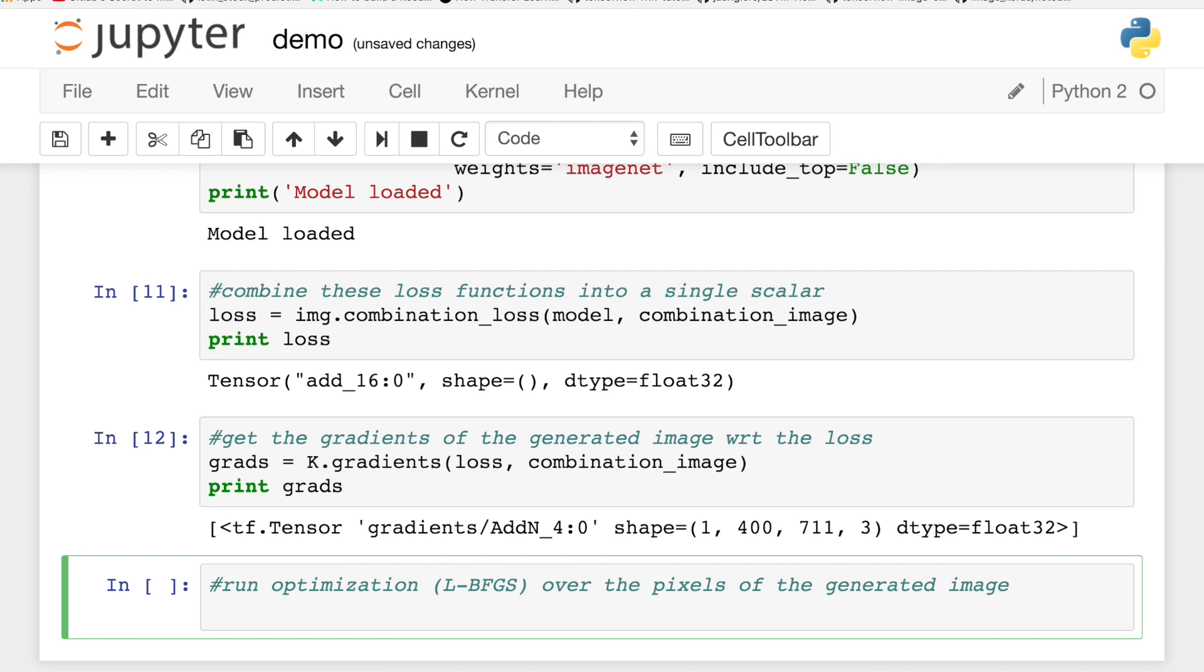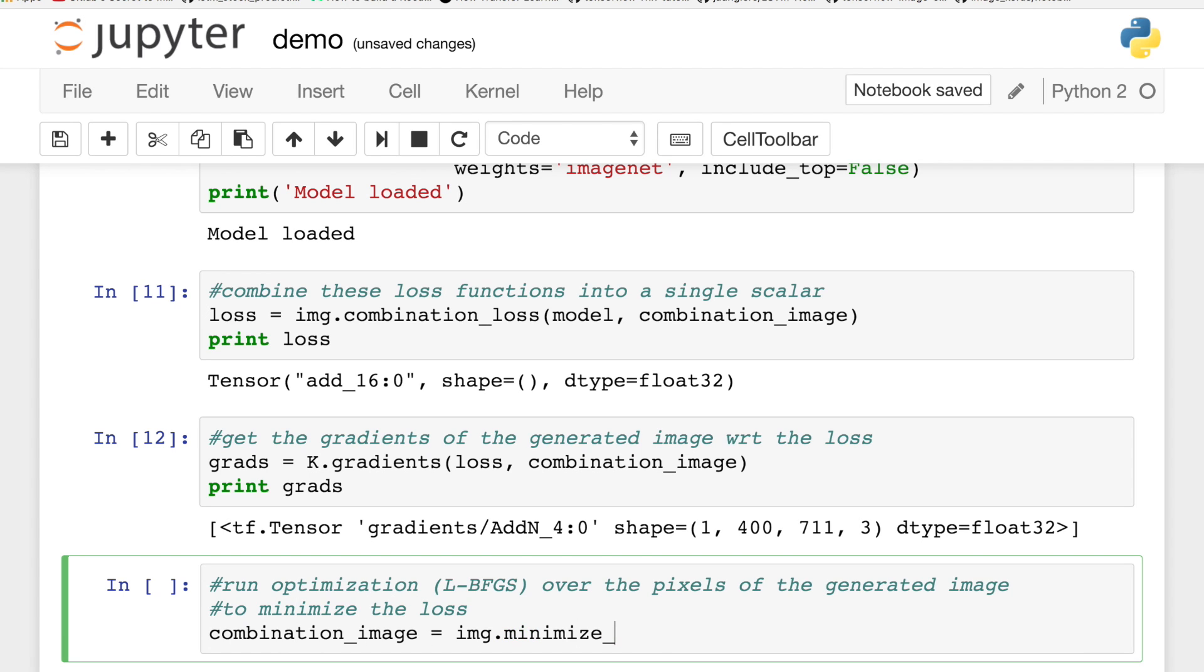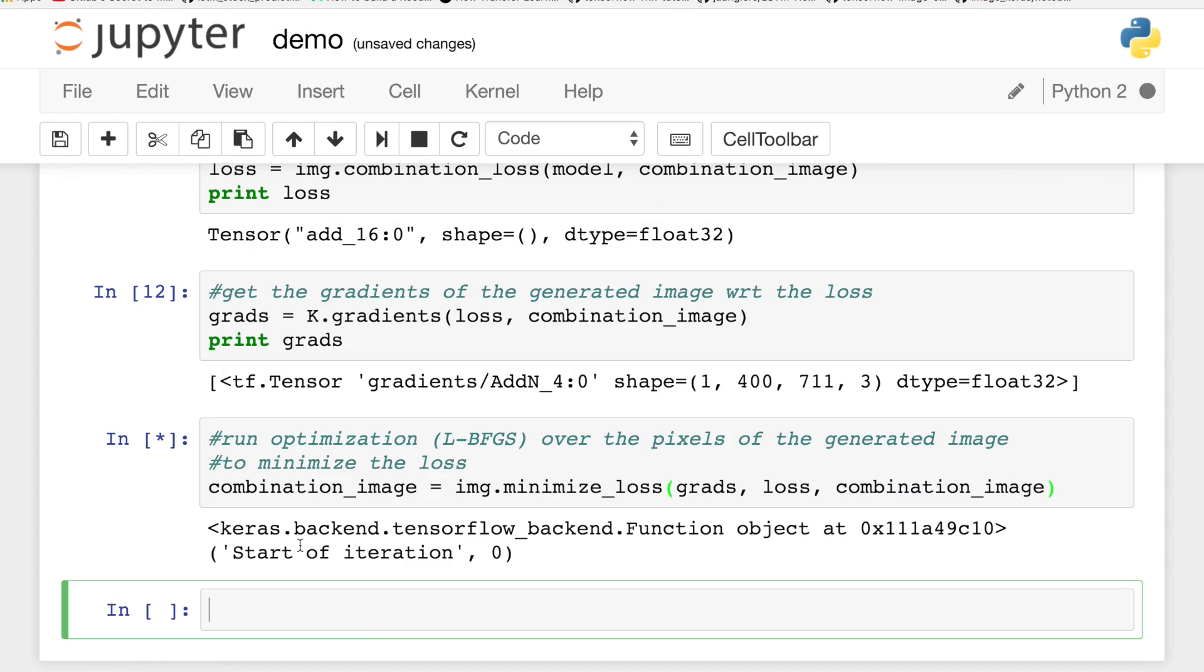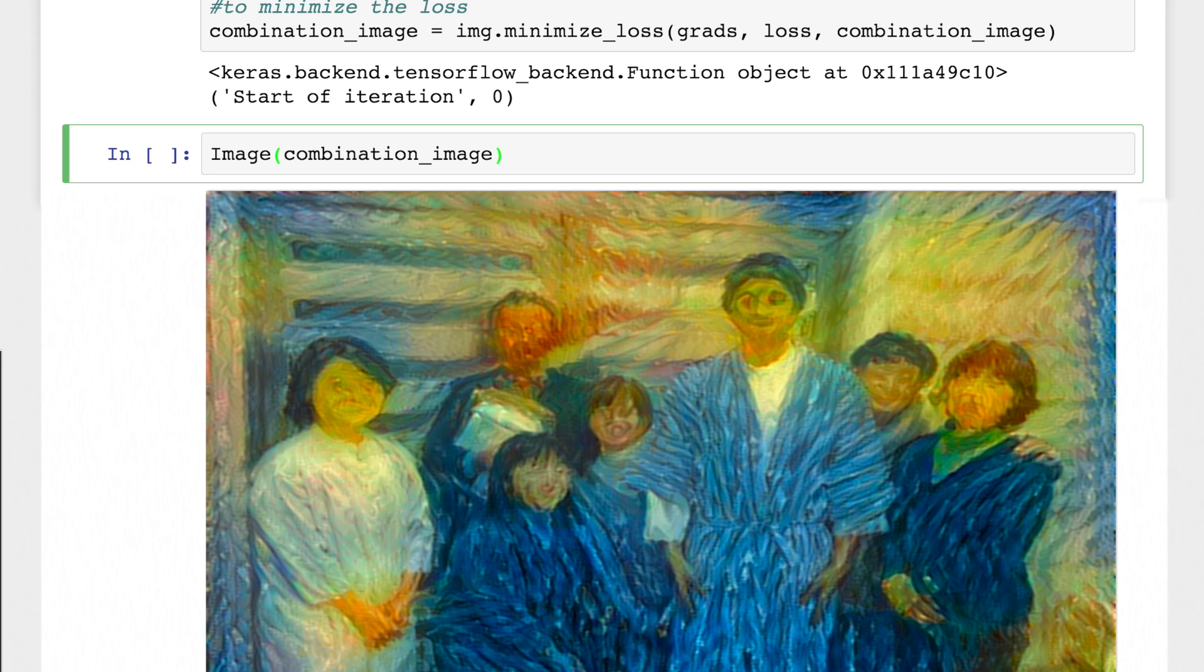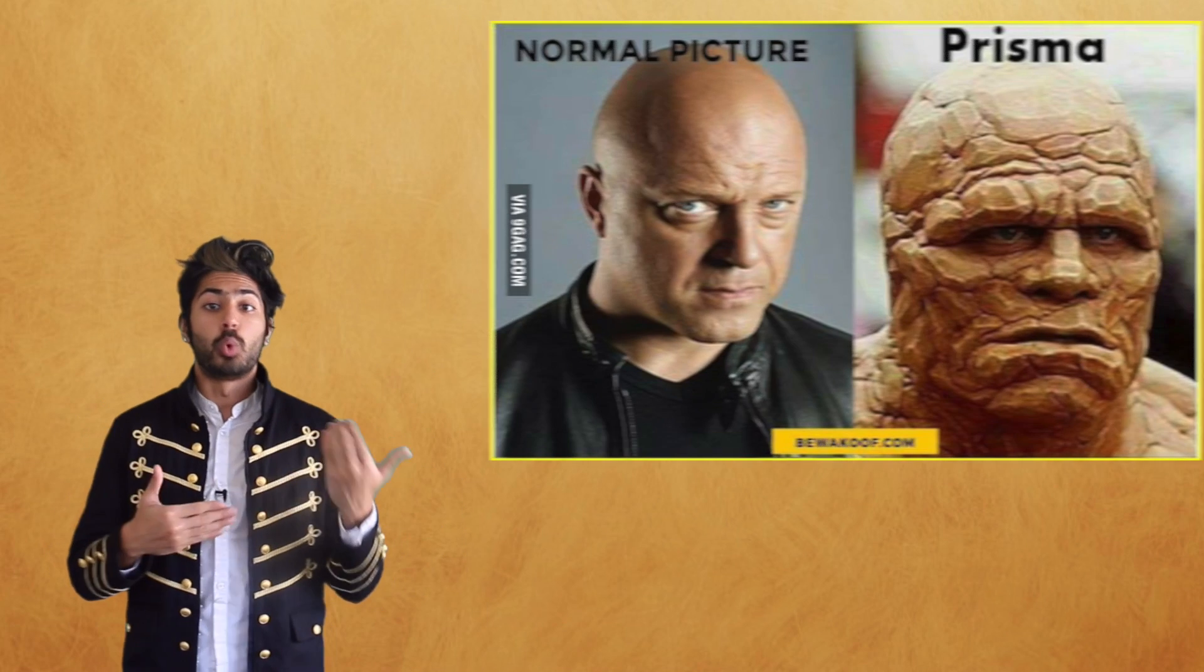Next, we'll run our optimization algorithm, called LBFGS, over the pixels of our output image to minimize this loss, which is very similar to stochastic gradient descent, but quicker to converge. We'll feed our minimizer function the gradients we calculated, and it'll output the result image. Let's see what this looks like. Dope. I'm going to submit this to GQ. There are mobile apps that do this as well.